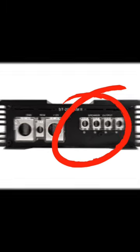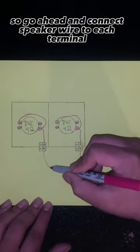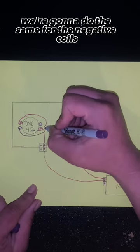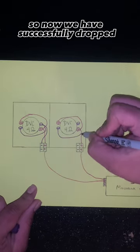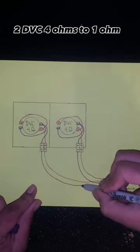It's still mono, so go ahead and connect speaker wire to each terminal on the amplifier. We're going to do the same for the negative coils. So now we have successfully dropped two DVC four-ohms to one ohm.